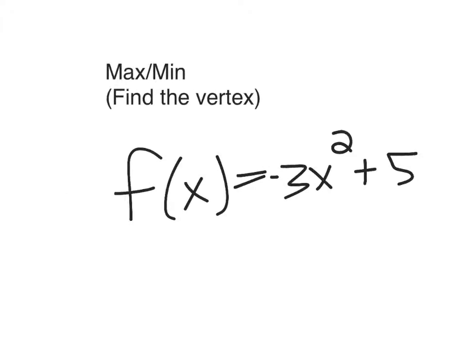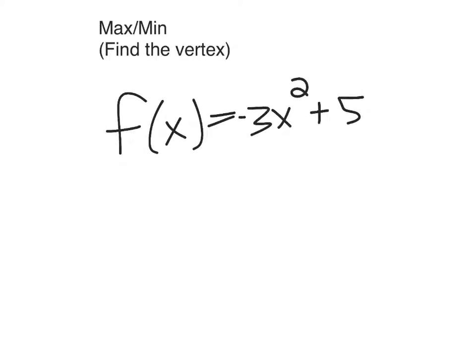So to find the maximum or the minimum of a function, first start off by analyzing how the function should look. If a is negative, and a comes from the coefficient of the x squared variable, always the number that's attached to x squared.